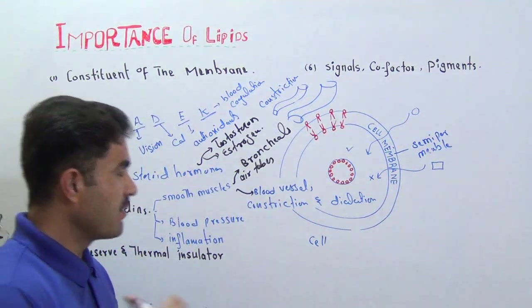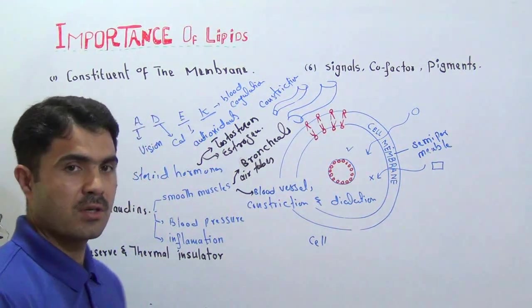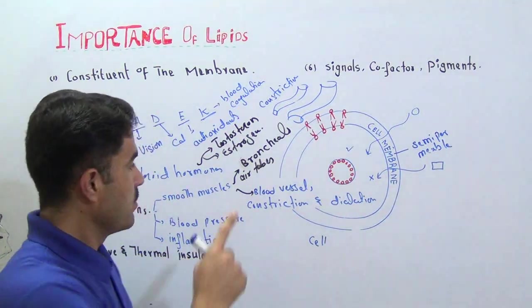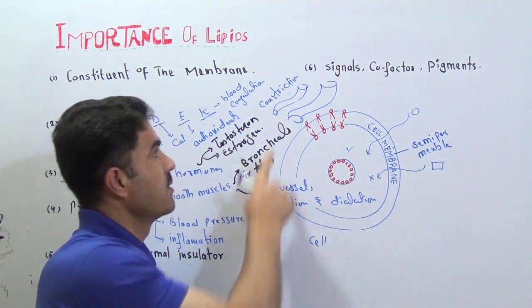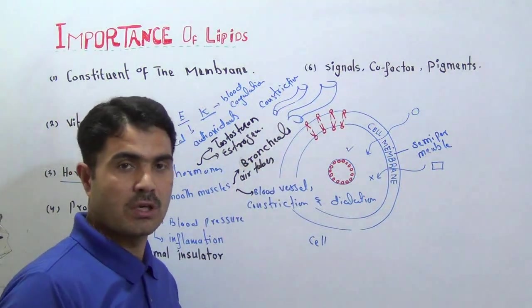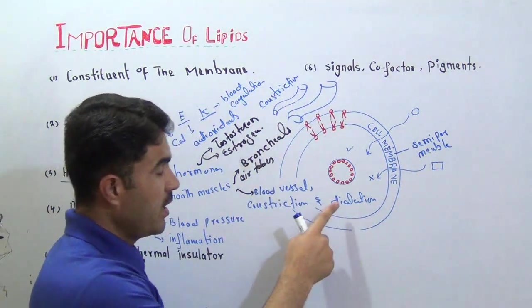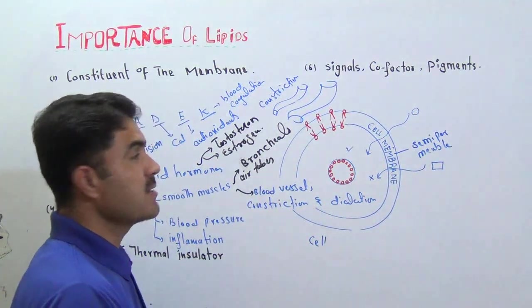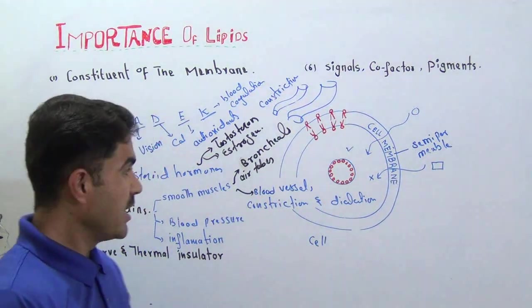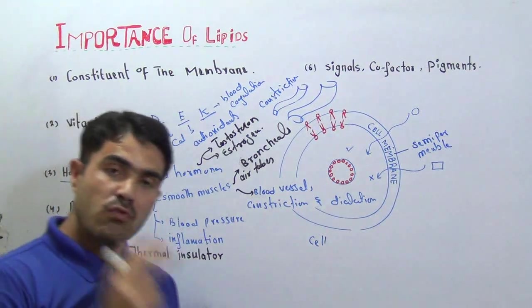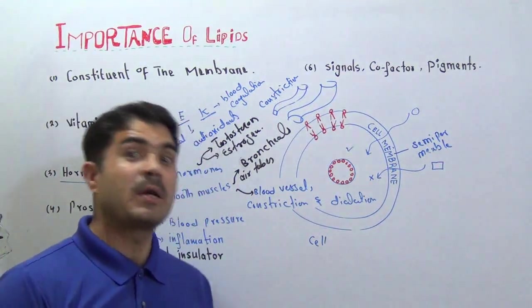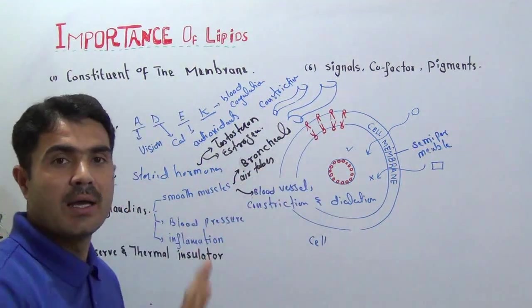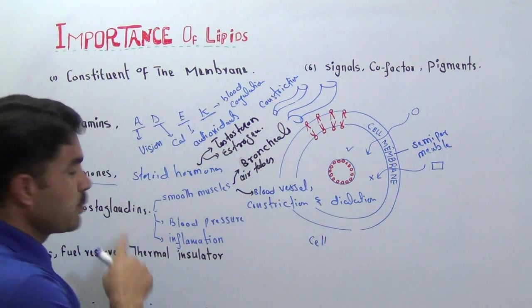The constriction and dilation causes a change in the diameter of the blood vessel. If your blood vessels are constricted, there is a chance of increased blood pressure. When blood vessels become dilated, there is a chance of decreased blood pressure. This means prostaglandins are involved in the regulation of blood pressure as well.